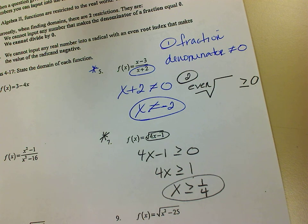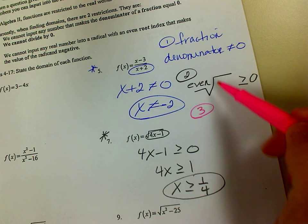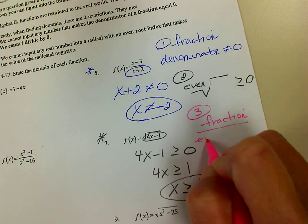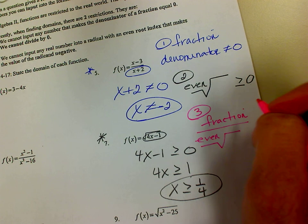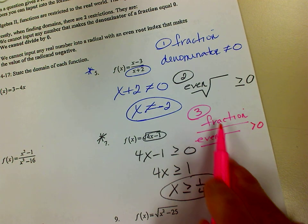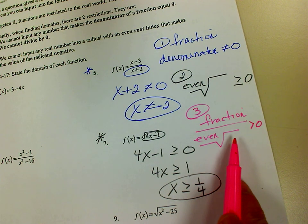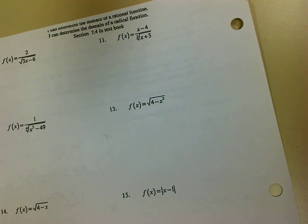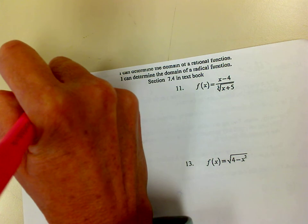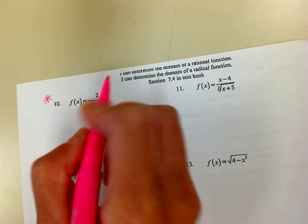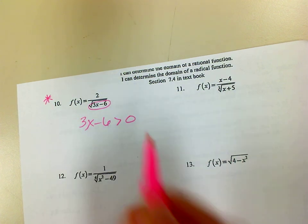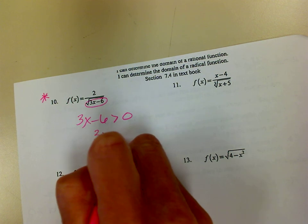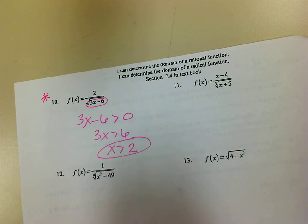The third thing you want to look for is if you have both of these things — a fraction and an even root radical in the denominator. If that's the case, then you want to put greater than 0, because I have a fraction which means it can't be 0, and I also have an even root radical which means it can't be negative. Number 10 looks like that. So the stuff underneath, which is 3x minus 6, must be greater than 0. I'm going to add over the 6, then divide over the 3. So that is my domain for number 10.